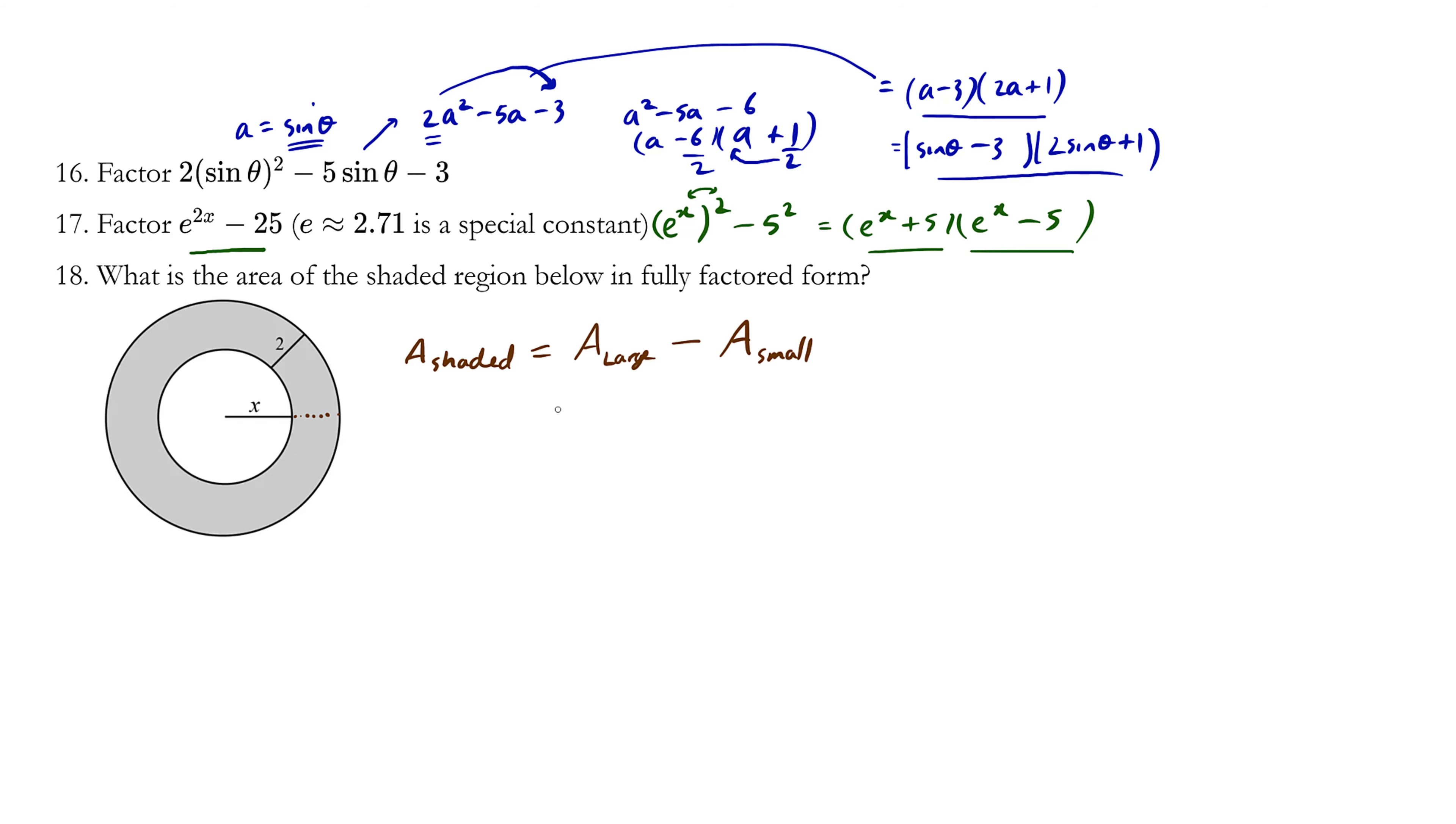So the area of the shaded region is equal to the area of the large circle minus the area of the hollow white circle - we'll just call it the small circle. Essentially, the area of the shaded is π R² (that's the big radius) minus π r². This is a formula that people learn from a young age.